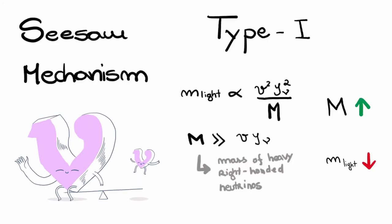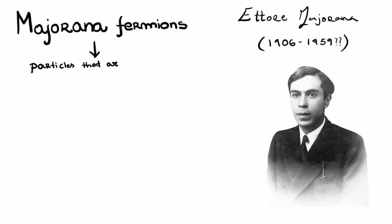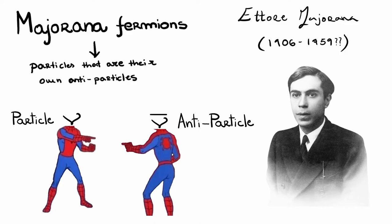But there's one thing that makes the neutrinos truly special. In 1937, Ettore Majorana described the type of particle which is its own antiparticle, and neutrinos are the only fermions which can be Majorana particles. This has very important implications for what comes next.